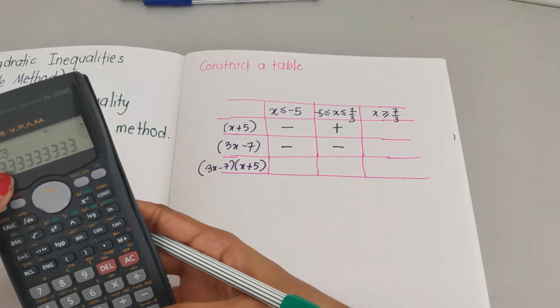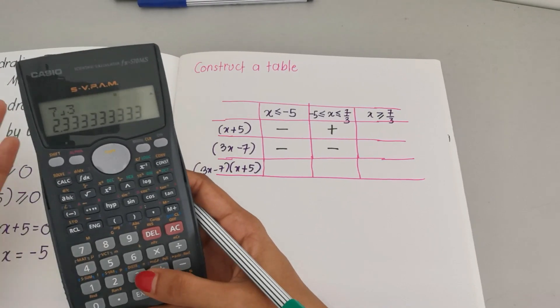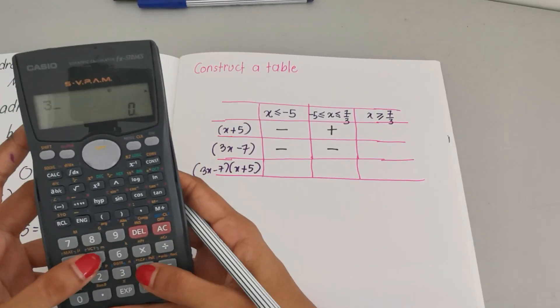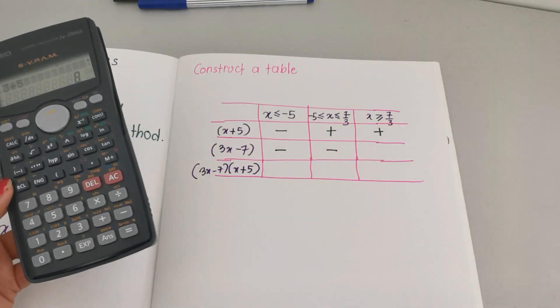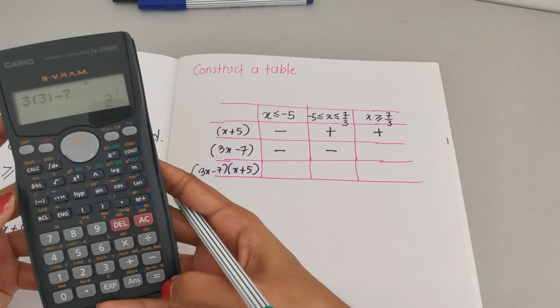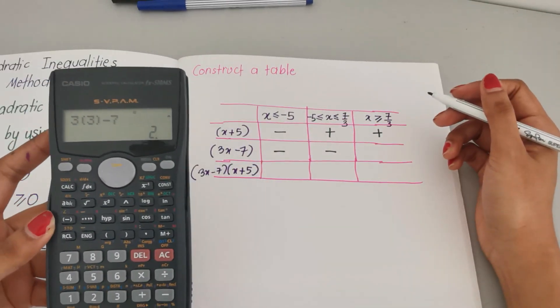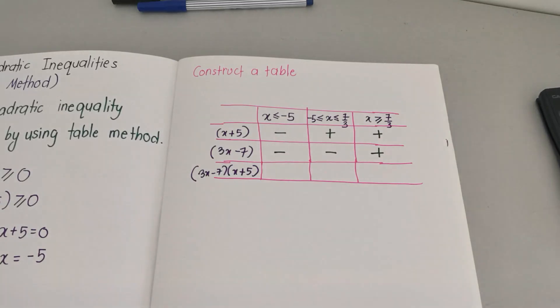Last column here, choose any number that's greater than 7 over 3. Since 7 over 3 is 2.33, we choose any number that's more than 2.33, so let's say we choose 3. 3 + 5 here we get 8, 8 is positive. Put in 3 here: 3 times 3 minus 7 we get 2, 2 is positive, so here we write positive.